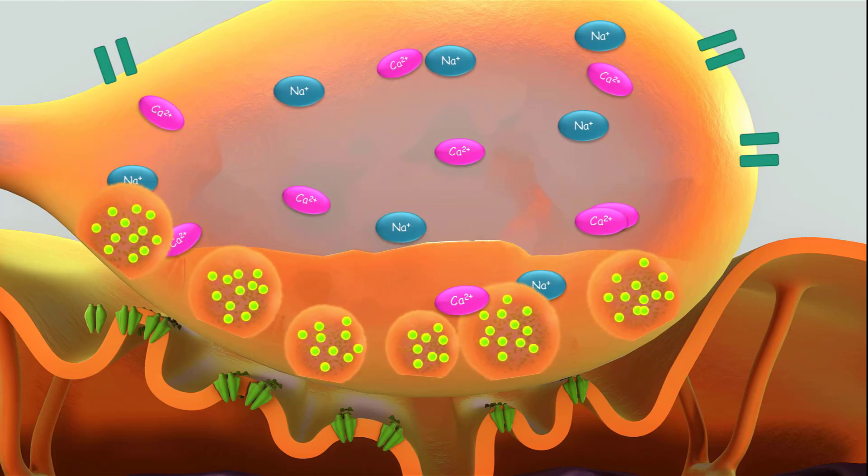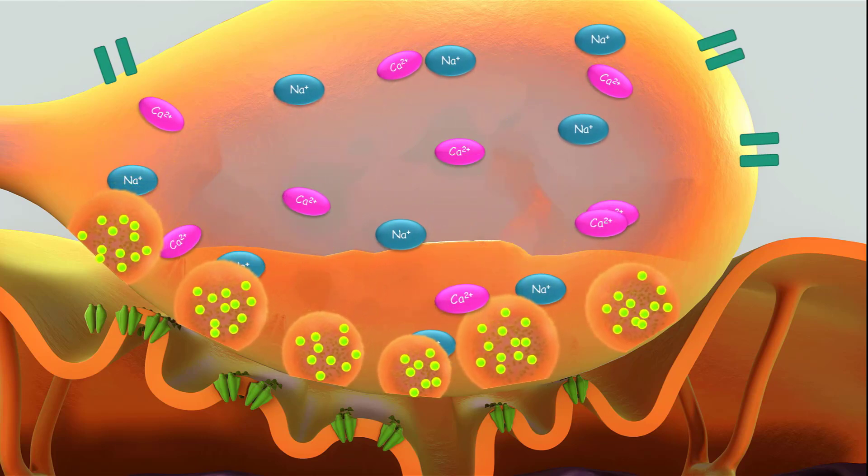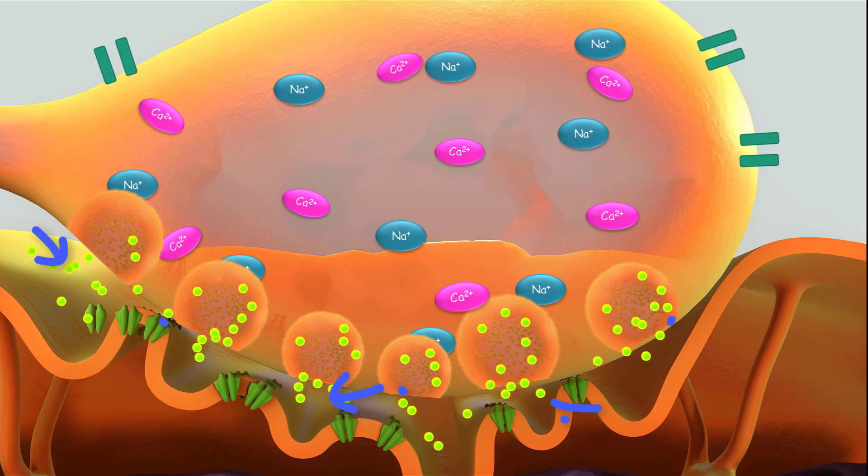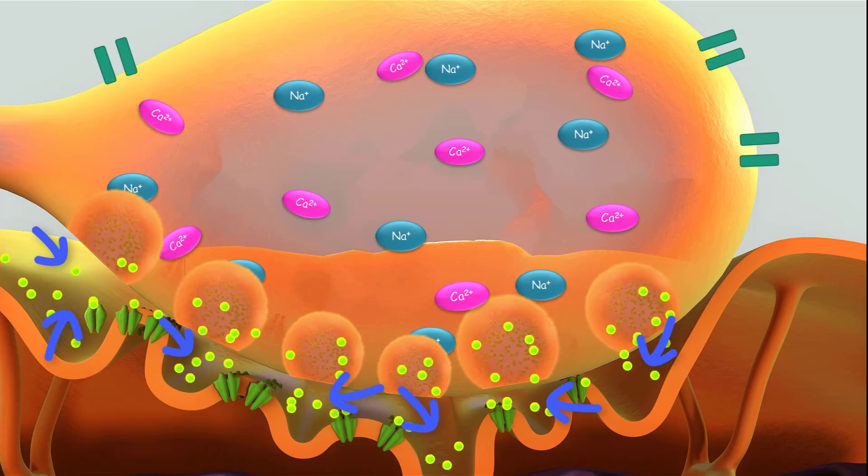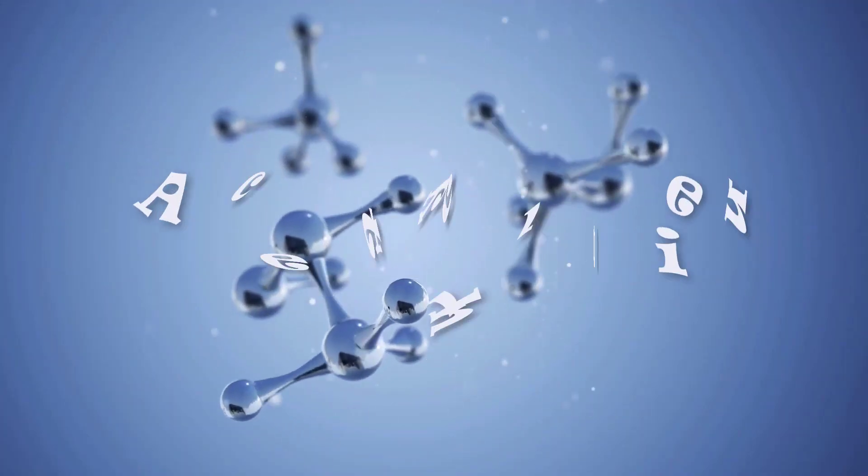The synaptic vesicles fuse to the presynaptic membrane and release neurotransmitter into the synaptic cleft. The neurotransmitter used at the neuromuscular junction is acetylcholine.